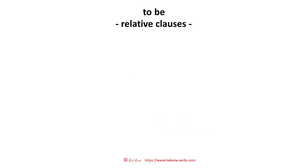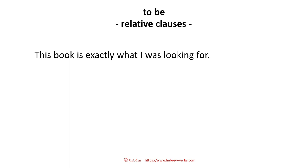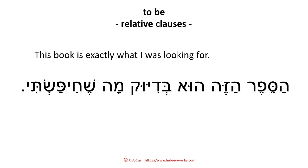Now, there is another thing to be aware of: relative clauses. For example, 'this book is exactly what I was looking for.' Here, book — what? That is a typical construction of a relative clause. So in Hebrew, this would be: this book, is who — here we do exactly the same, we add the personal pronoun. Is who, exactly — bidiuk — what — ma she. Ma she: this is very typical for relative clauses and you need the 'she,' you cannot leave it out. So: ma she — what I was looking for.